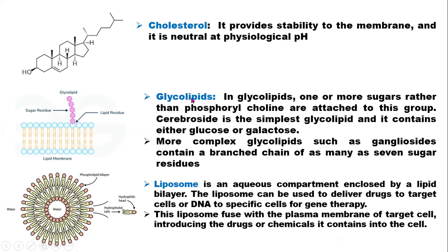You can also have glycolipids — lipids that have carbohydrates attached to them. They have sugar residues attached to the lipid. In glycolipids, one or more sugars rather than phosphorylcholine are attached. Cerebroside is the simplest glycolipid and contains either glucose or galactose. More complex glycolipids, such as gangliosides, contain a branched chain of as many as seven sugar residues.